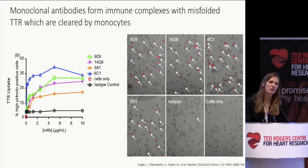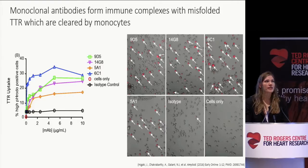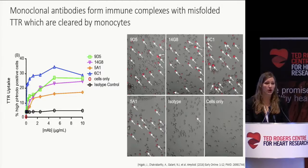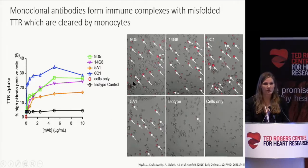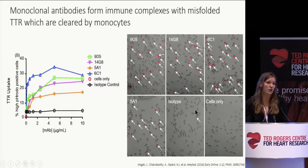Comparing these stains with our 14G8 monoclonal antibody, we saw nice co-localization, indicating that our monoclonal antibodies were actually able to target and label TTR amyloid in cardiac tissue. After that, we wanted to see whether our antibodies could induce an immune response. Using a THP1 cell assay with monocytes, we labeled our unfolded transthyretin protein with a fluorescent marker. Upon exposure of that transthyretin protein with the monoclonals, we saw monocytic cellular uptake of that protein, in comparison to the isotype control where we saw no uptake whatsoever.